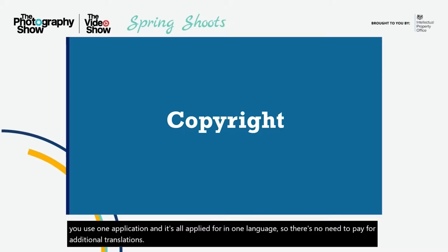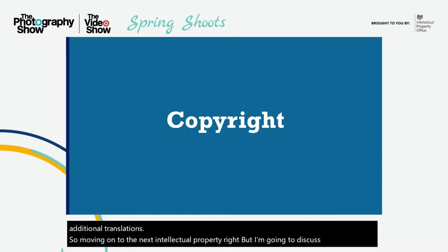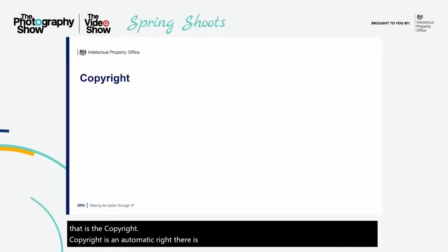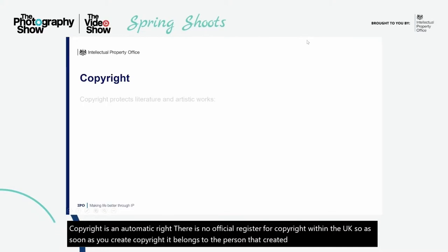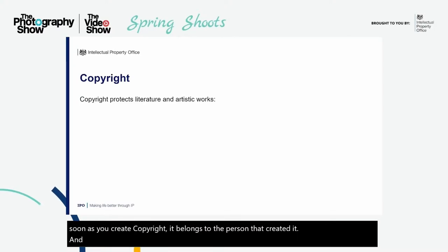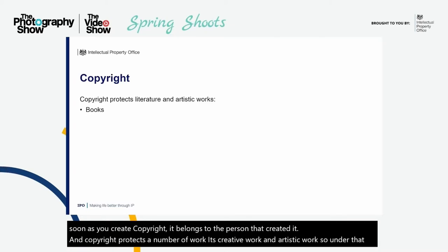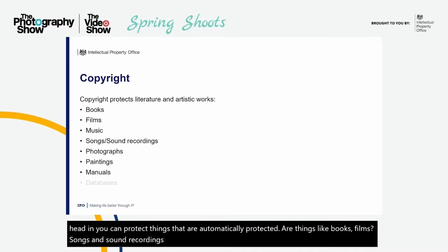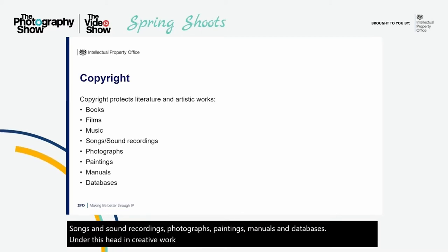Moving on to copyright. Copyright is an automatic right — there is no official register for copyright within the UK. As soon as you create copyright, it belongs to the person that created it. Copyright protects creative and artistic work, so things that are automatically protected include books, films, music, songs and sound recordings, photographs, paintings, manuals and databases. Creative work like websites and apps would also be included in automatic copyright rights, and software is also included.